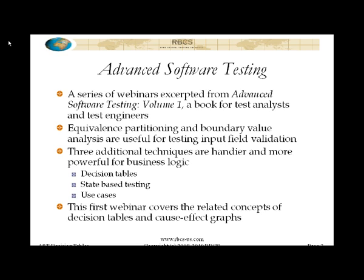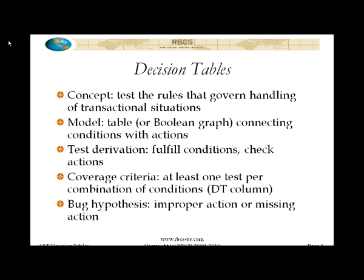Here we're going to cover decision tables and a related concept called a cause-effect graph, which is not something I think is used as much, but it is equivalent and it would be a good idea to understand how to deal with one should you come across one. Decision tables conceptually are about testing the rules that govern the handling of transactional situations.